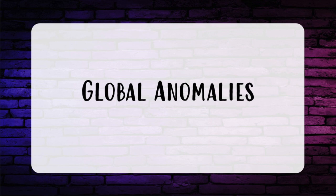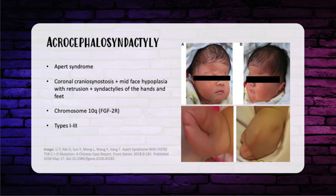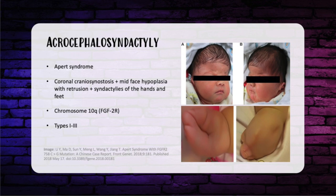Moving on to the global category — the in-service favorite is Apert syndrome, or acrocephalosyndactyly. This consists of coronal craniosynostosis, midface hypoplasia with retrusion, and syndactyly of the hands and feet. The defect is in chromosome 10q, the site of the fibroblast growth factor 2 receptor. There are three types within the Apert syndactyly spectrum. Type 1: syndactyly of the second through fourth digits with a free thumb — the spade hand. Type 2: syndactyly of digits two through four with simple thumb syndactyly — the mitten hand. Type 3: complex syndactyly of all digits with complex thumb syndactyly — the rosebud hand.